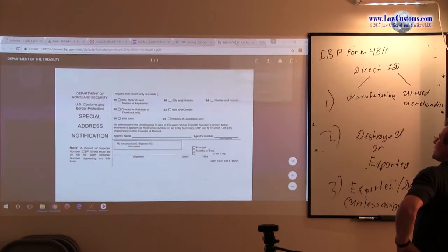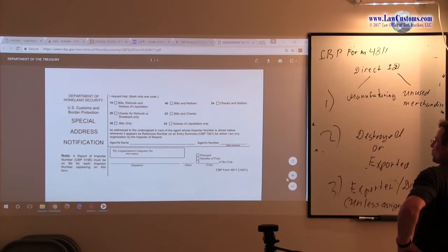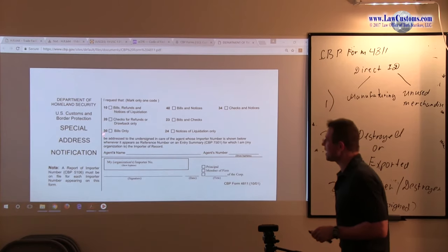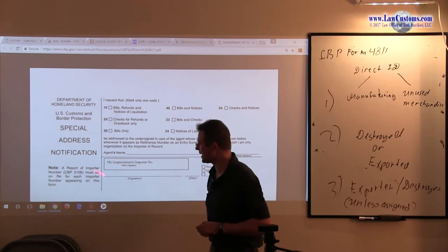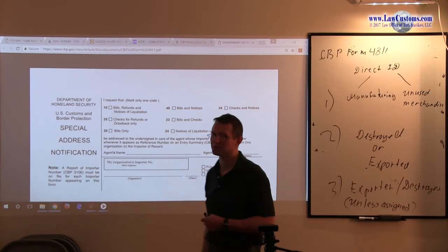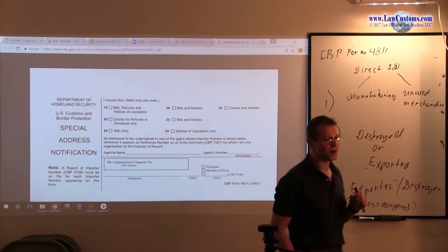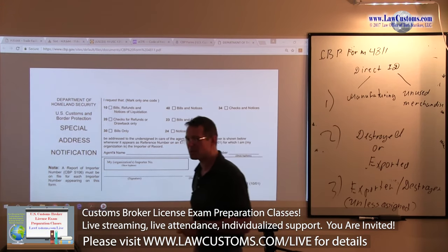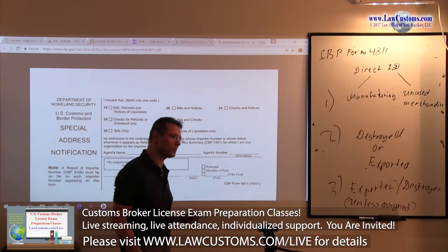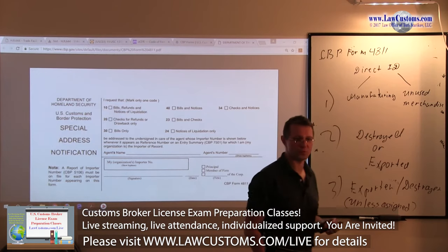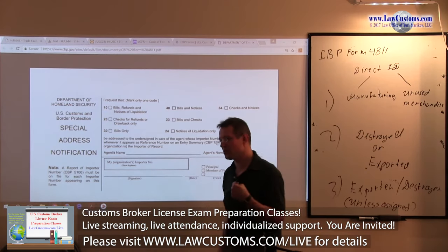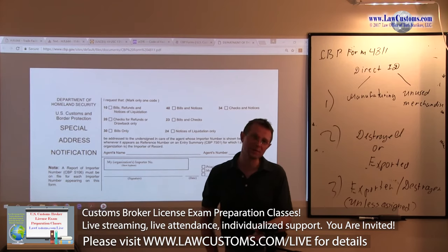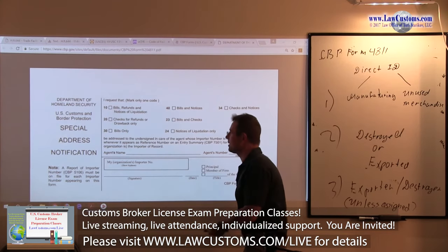This is what we're talking about—this is a form for special address notification. What you have here is connected to form 5106 and form 7501, because sometimes you may want someone else as an importer, or even as a licensed customs broker, to handle the financial part, not the submission or procedural part. You may want to have your bills, refunds, or notices handled by a CPA or third-party consultant.